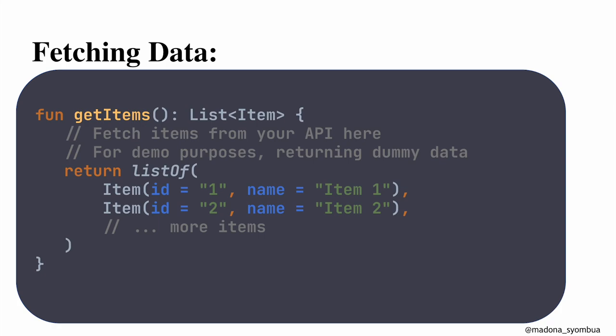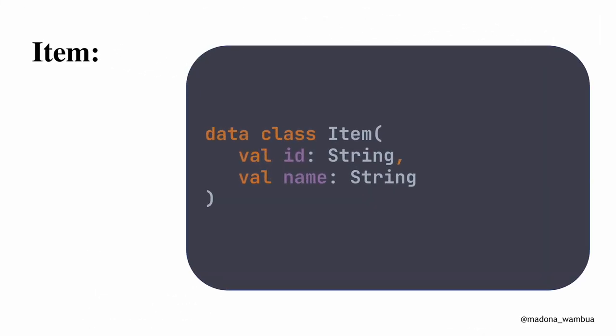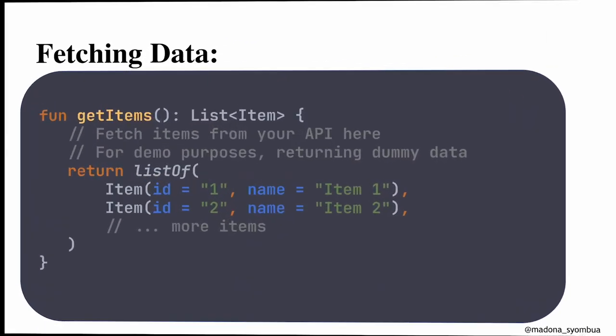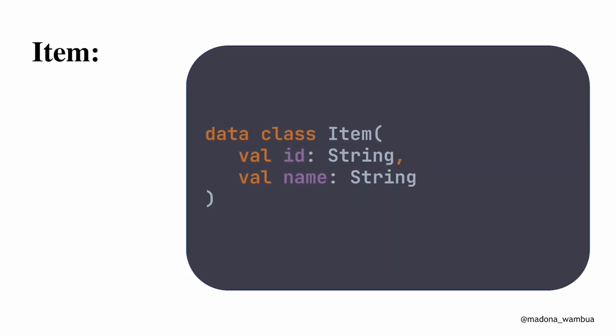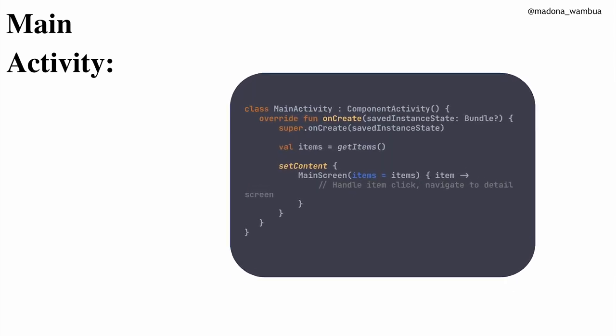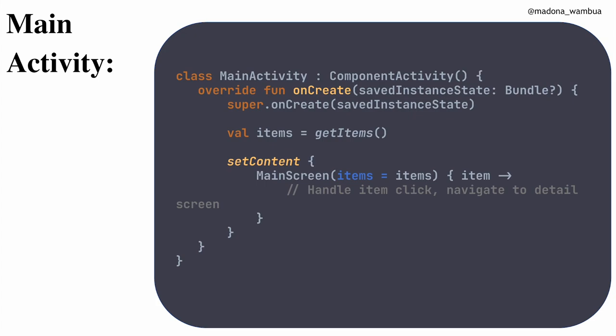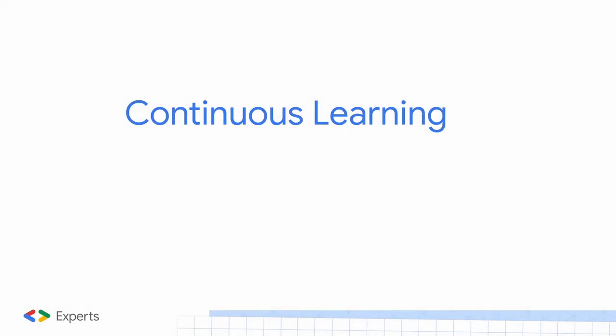There are so many ways of building applications that are well managed by modern tools. The getItems function returns a list with pseudocode demo data. The Item data class has val id and val name. In the main activity you call the main screen composable we created. When you have time, look into how you can complete this and build it out fully.